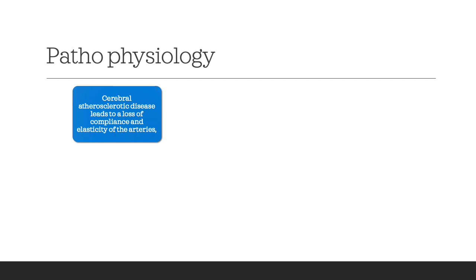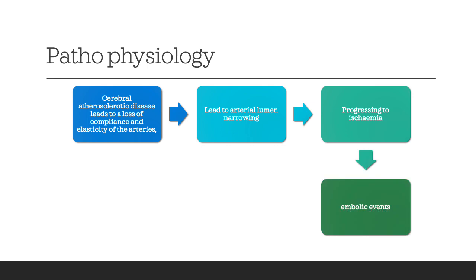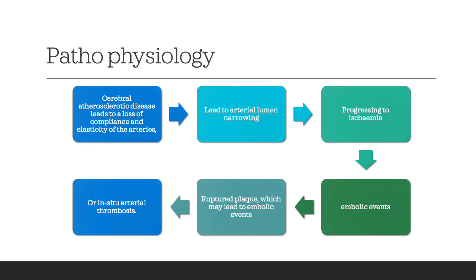Regarding pathophysiology: cerebral atherosclerotic disease leads to loss of compliance and elasticity of the arteries, resulting in arterial lumen narrowing, progressive ischemia, and embolic events primarily because of turbulence. The exposed plaque can rupture, inducing an embolic event or in-situ thrombosis. The patient can present with stroke from any one of these mechanisms.